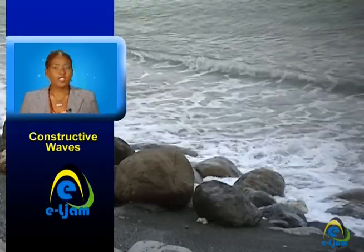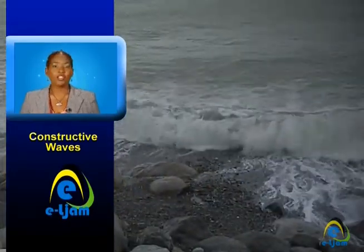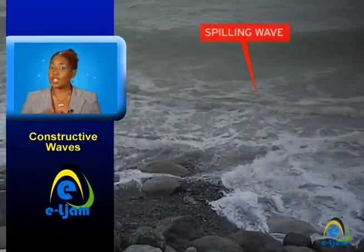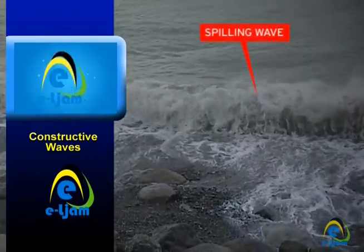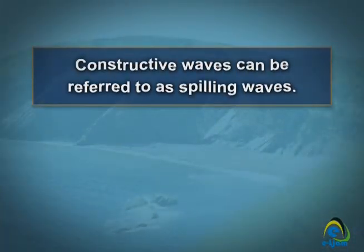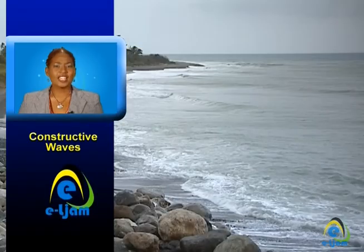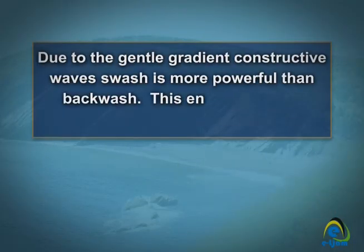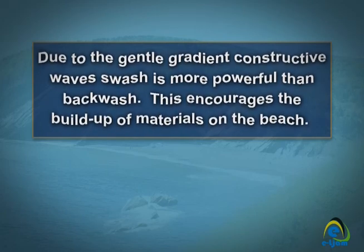Constructive waves commonly have a height of less than two meters. When the constructive waves break against the shore, their crest — the top of the wave — spills over. Because of this, they can be referred to as spilling waves. The gradient of the coast slope is also far gentler where constructive waves are present. Due to the gentle gradient, the swash is more powerful than the backwash, which encourages the buildup of materials on the beach.